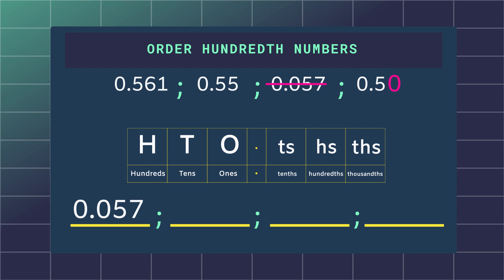What makes the next step easier is that you can already add placeholders or a zero for the number 0.500 and 0.550 to take up the thousandths place.